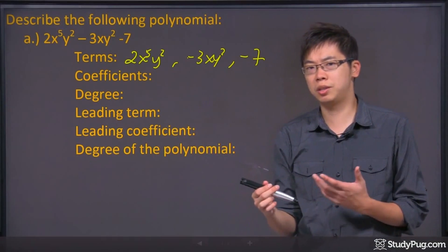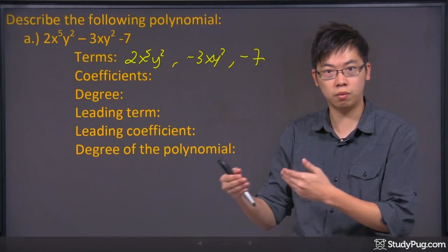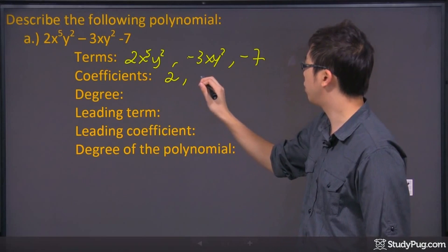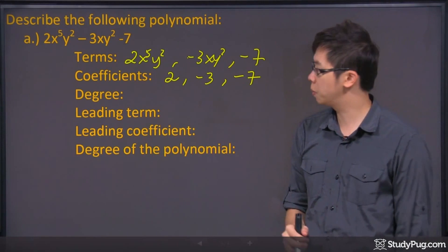The coefficient is just a number in the front of your term, every single term. So we got a 2 for the first one, we also have the negative 3 for the second one, and a negative 7 for the third one.